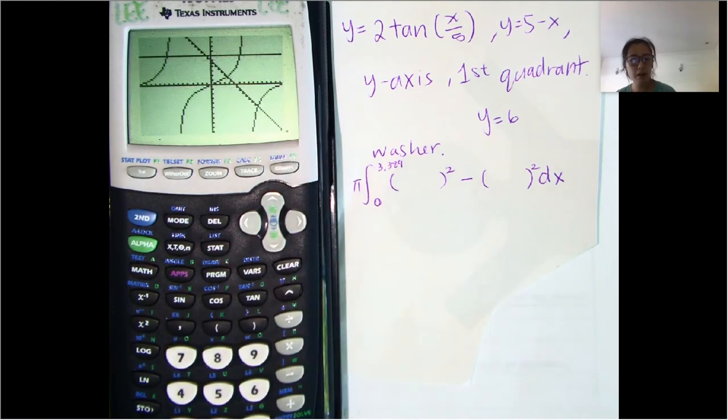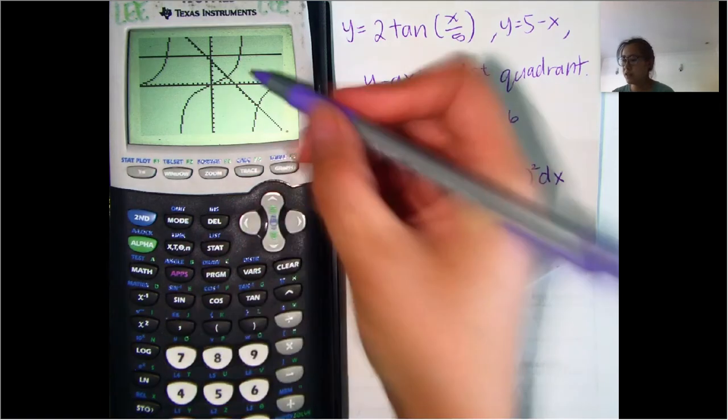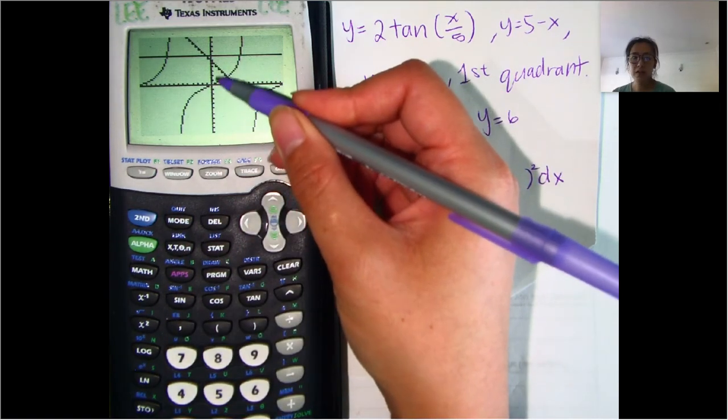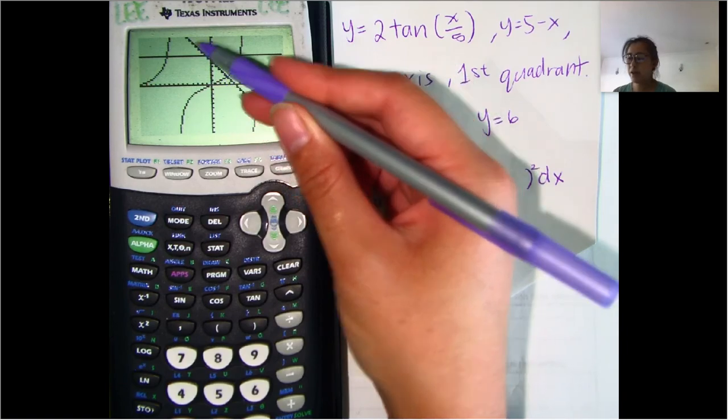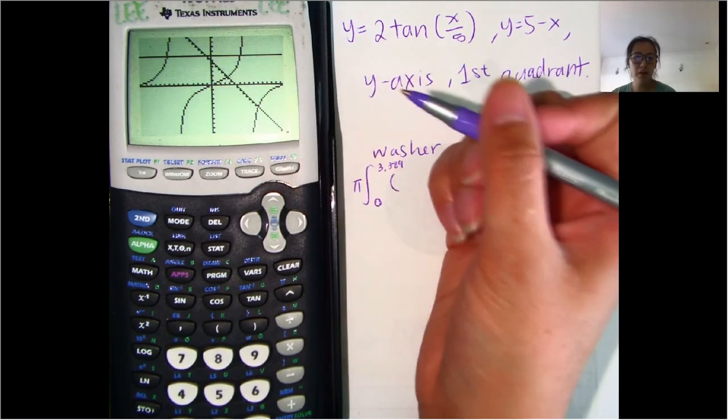Let's look back at the graph. Now, we want to do the outer radius squared minus the inner radius squared. So which of these curves is further away from this line that we're revolving around?